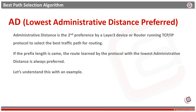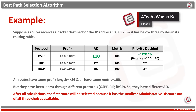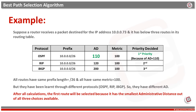Suppose a router receives packets destined for IP address 10.0.0.73 and it has three routes in its routing table. All routes have the same prefix length of /26 and the same metric of 100, but they have been learned through different protocols. The first route is received via OSPF, the second via RIP, and the third via IBGP, so they have different admin distances. After all calculations, the first route will be selected because it has the smallest admin distance out of the three choices. In this way, admin distance is the second choice after the prefix length.